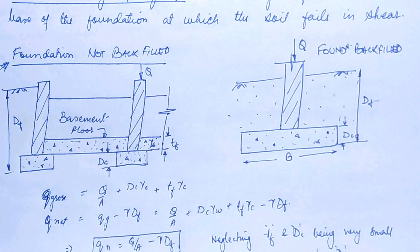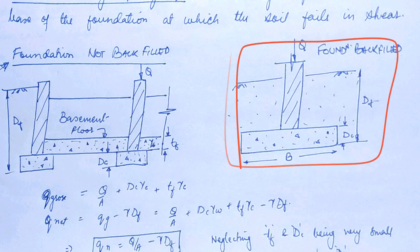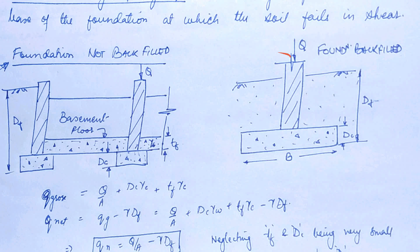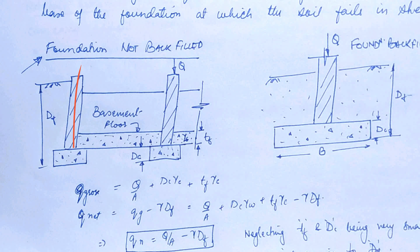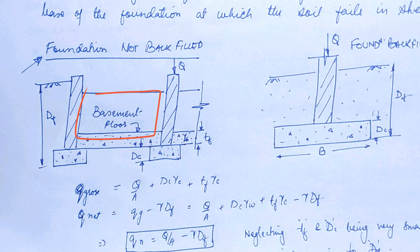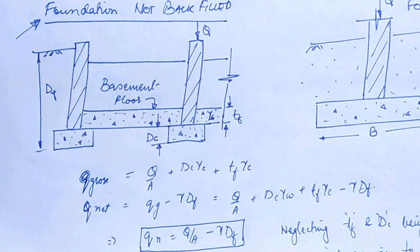We have been discussing the case where the footing was backfilled with soil. Now let us take up the case when there is no backfill in your foundation. This is your column resting on footing — this is a concrete bed — and it is designed in the case of a basement, such as for parking cars. That means the soil is not retained here. Let's find the gross bearing capacity and net bearing capacity in this case.